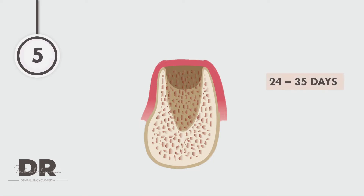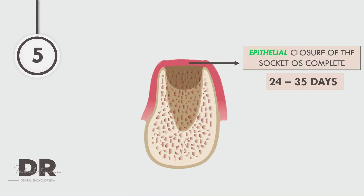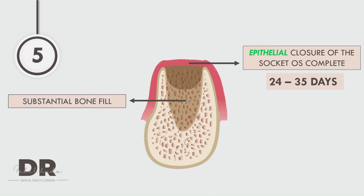Going on to the fifth stage: there are two things to consider. First is the soft tissue closure over the socket, which happens from about 24 to 35 days — so this epithelial closure takes approximately one month. Second is the substantial bone fill of the socket, which also happens in around five to ten weeks.